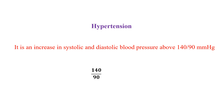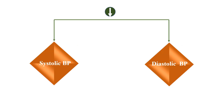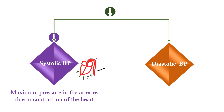Here, 140 is the systolic blood pressure and 90 is the diastolic blood pressure. The question is: why is systolic blood pressure higher than diastolic blood pressure? Systolic blood pressure is the maximum pressure in the arteries due to the contraction of the heart.